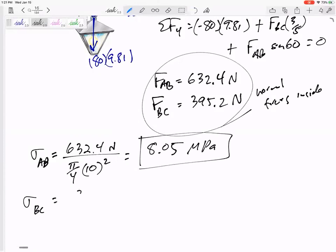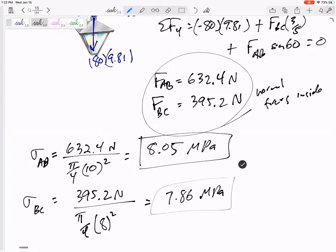Stress inside section BC, 395.2 over pi by 4, 8 squared, 7.86 MPa, stress inside section BC.